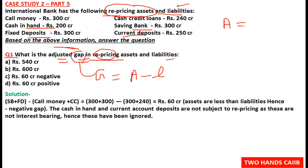Cash in hand has nothing to do with interest rates — if rates go up or down it doesn't affect cash in hand, so we ignore it. Current deposits also earn no interest — the bank pays no interest on current accounts — so those are also ignored. The remaining items, saving bank deposits and fixed deposits, are liabilities for the bank because the bank pays interest on them.